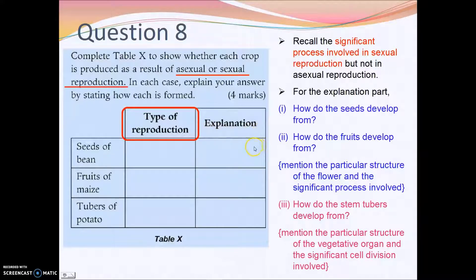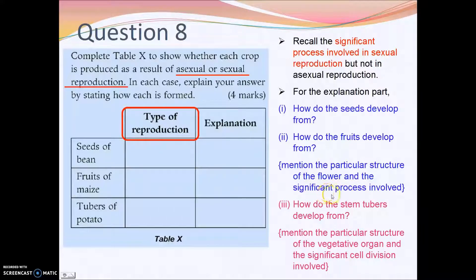For the explanation part, you need to describe how the seed develops and how the fruit develops. You must mention the particular structure or part of the flower involved, and of course the significant process — fertilization. So state which structure in the flower it develops from after fertilization occurs.